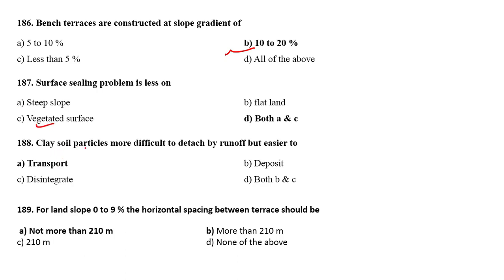Clay soil particles are more difficult to detach from soil by runoff but easier to transport. For land slope 0 to 9 percent, the horizontal spacing between the tiles should be not more than 210 meters.